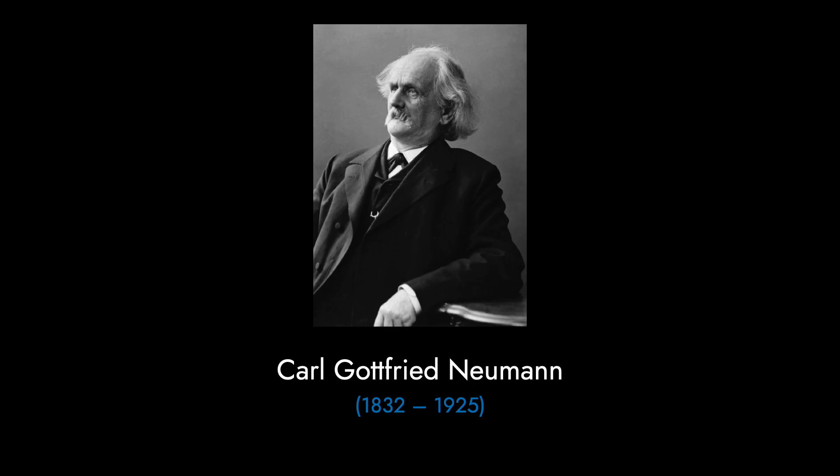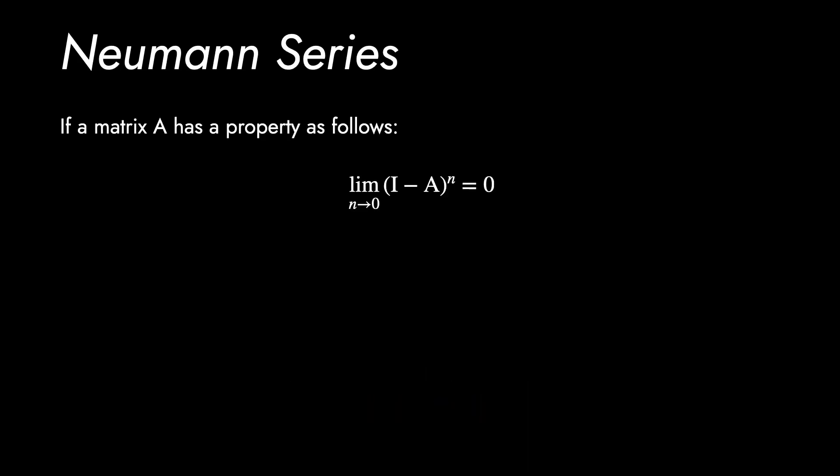The method is named after Carl Neumann in 1877 in the context of potential theory. If a matrix A has a property that the above equation holds true, then A is non-singular matrix, or is invertible.